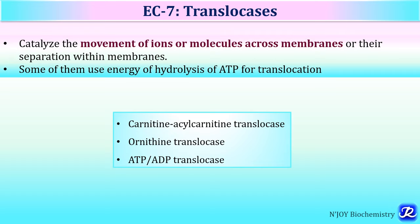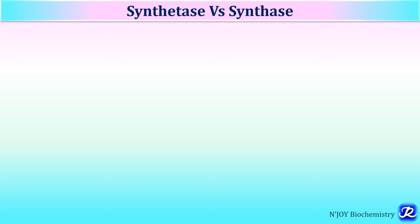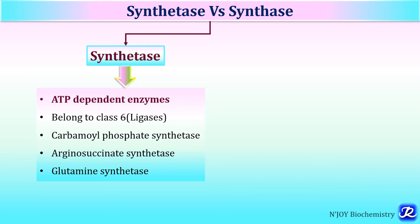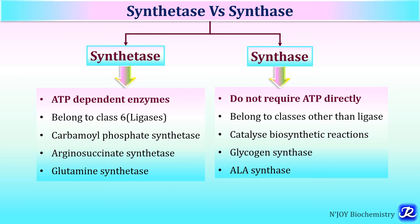Two terms are often confused: synthetases and synthases. Synthetases are ATP-dependent enzymes belonging to class 6 (ligases); examples include carbamoyl phosphate synthetase, argininosuccinate synthetase, and glutamine synthetase. Synthases do not require ATP directly and belong to classes other than ligases; they catalyze biosynthetic reactions — for example, glycogen synthase and ALA synthase for heme synthesis.